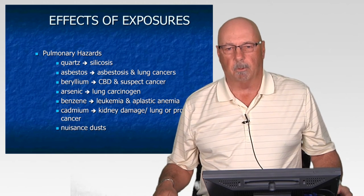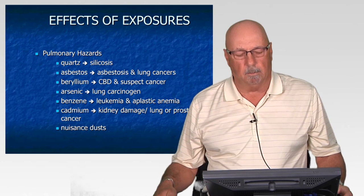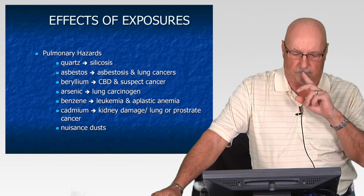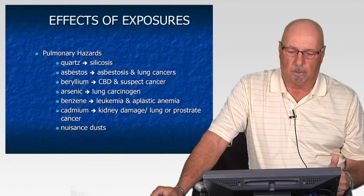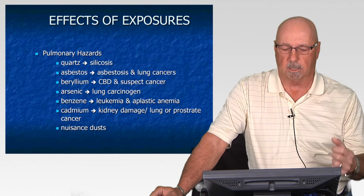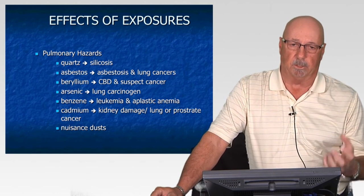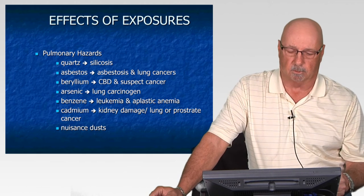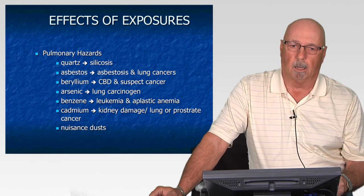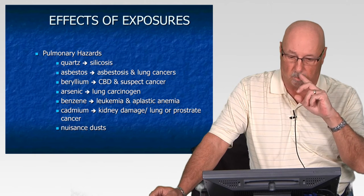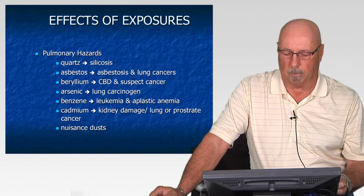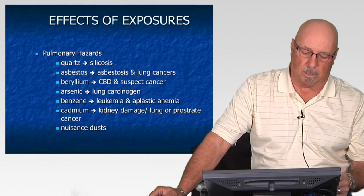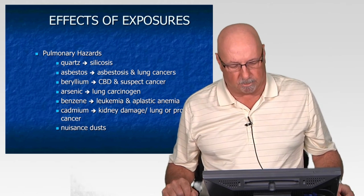Respiratory tract or pulmonary hazards can damage the respiratory tract system. When we inhale, any contaminant in the air is brought into the various regions of the respiratory tract — it'll either be exhaled or remain in the lung systems and be deposited there. Once deposited, it can either do nothing or cause damage, or for gases and vapors the toxic substances can pass right through the respiratory tract into the blood system and be carried throughout other biological systems.